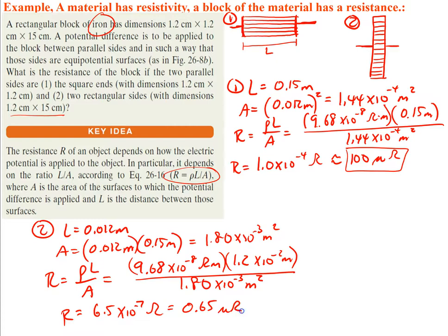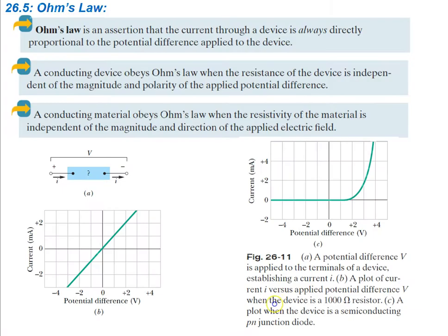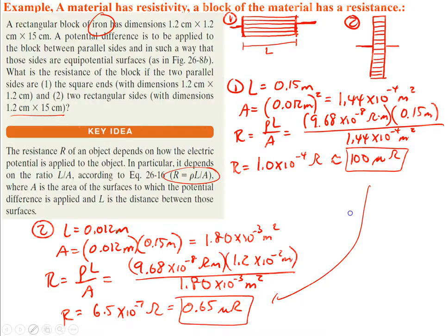Notice that depending on the orientation of the same resistor, the difference in resistance is actually quite large — 100 micro-ohms in the first case versus only 0.65 micro-ohms when you changed the direction.